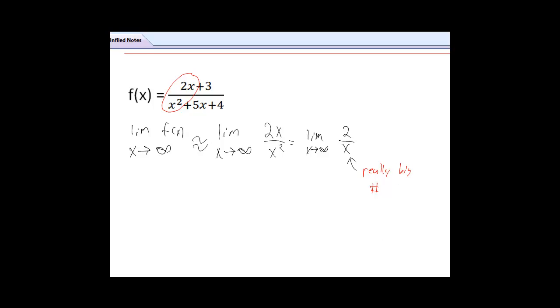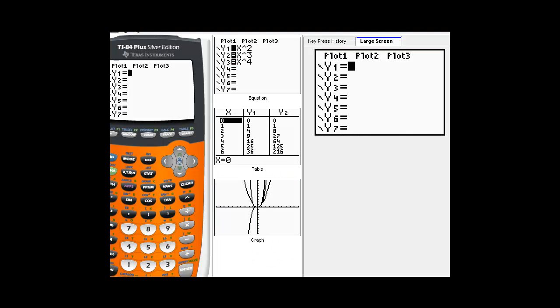our end behavior model is the limit as x approaches 2 over x. But as x gets really huge, you're dividing by a really huge number. So if you do 2 divided by a million, that's basically nothing. It's a really tiny fraction. So as we take really big x values, 2 over x becomes really small.